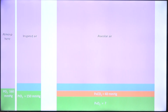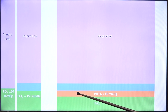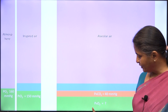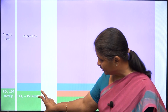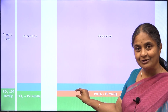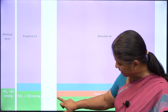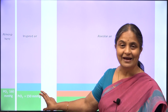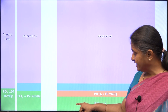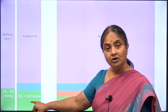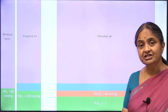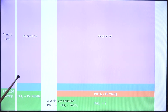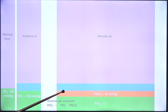The alveolar gas equation gives us a way of estimating alveolar oxygen when we know inspired oxygen concentration and alveolar carbon dioxide concentration. The sum of carbon dioxide and oxygen in alveolar air equals the concentration of oxygen in the inspired air — it is as simple as that. This relationship was noted by Rahn and Fenn, and the alveolar gas equation tells us that alveolar oxygen equals inspired oxygen minus alveolar carbon dioxide.